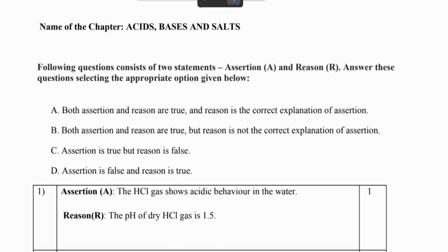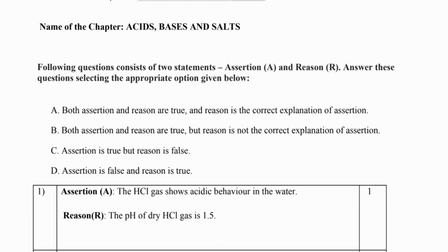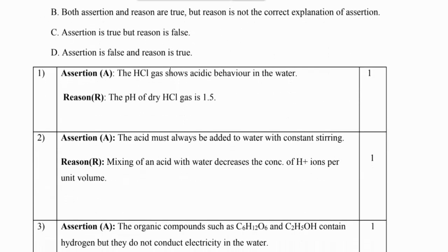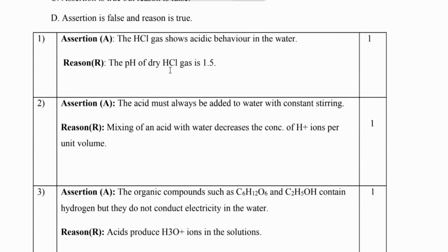Now the reason given is that pH of dry HCl gas is 1.5, so the reason is false - that pH value is incorrect. So the answer is C, because assertion is true and reason is false.